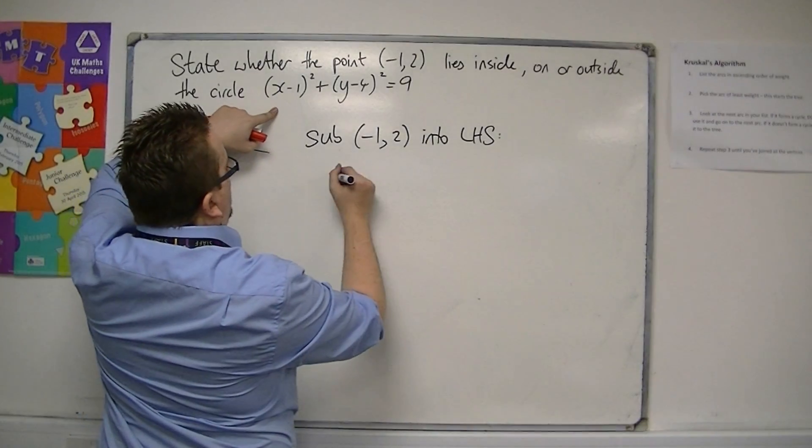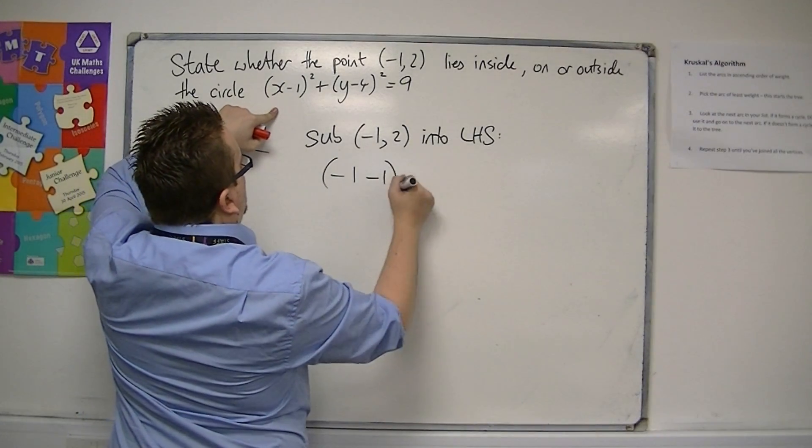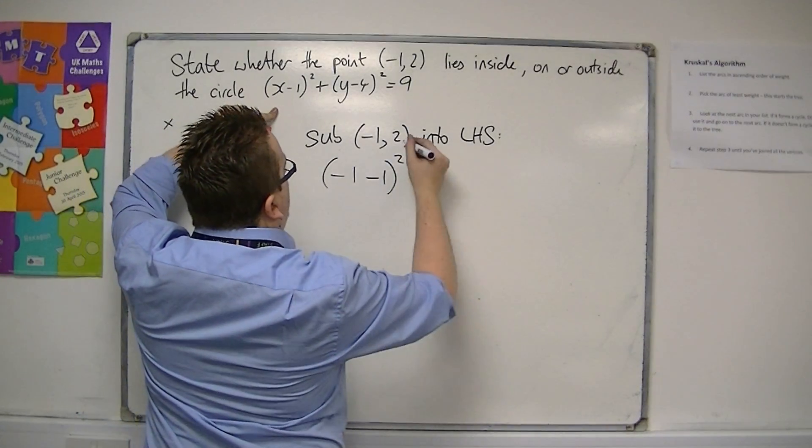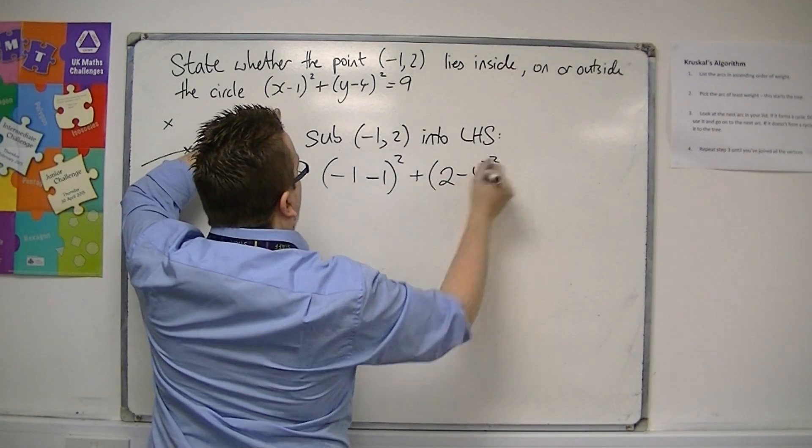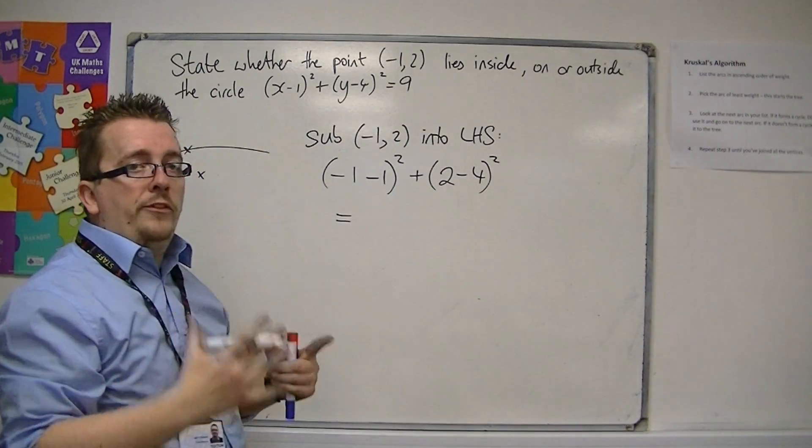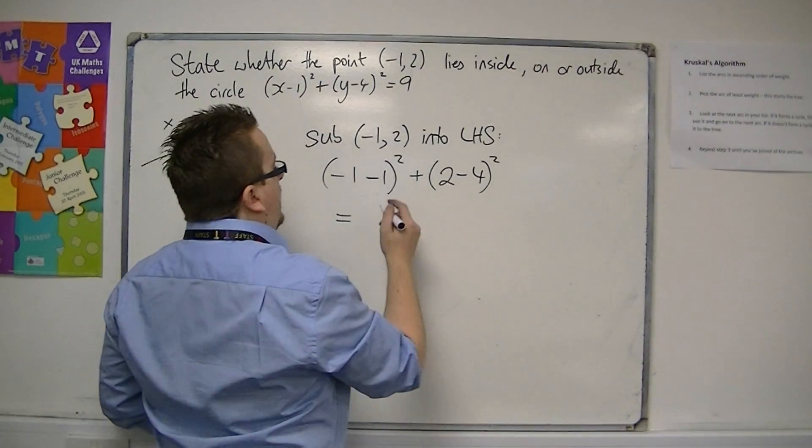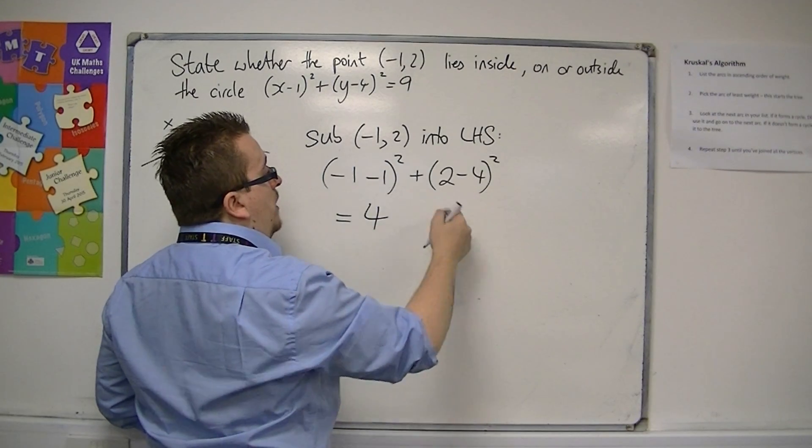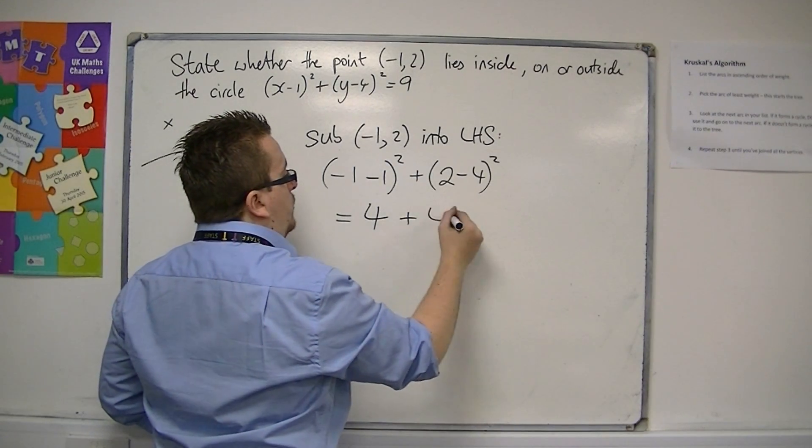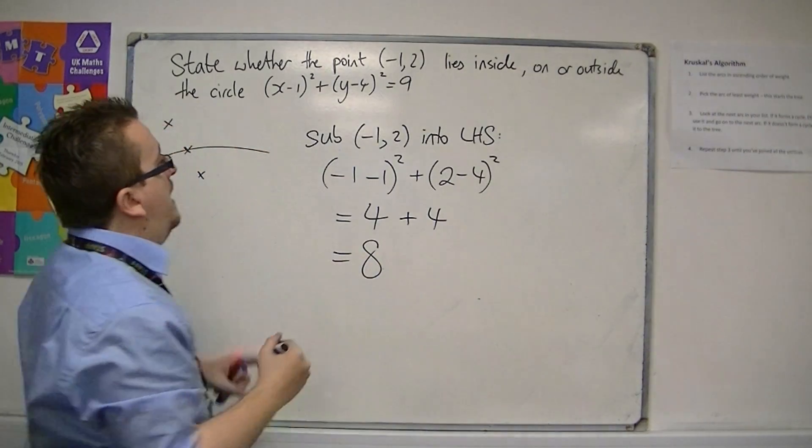So x is -1, y is 2, so we get -1 - 1 = -2, square it is 4, and 2 - 4 = -2, square it you get 4, and so we get 8.